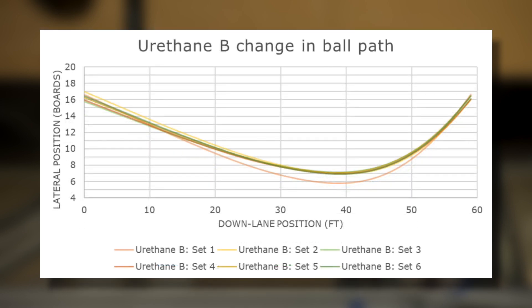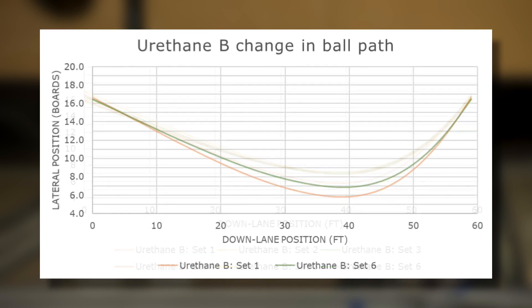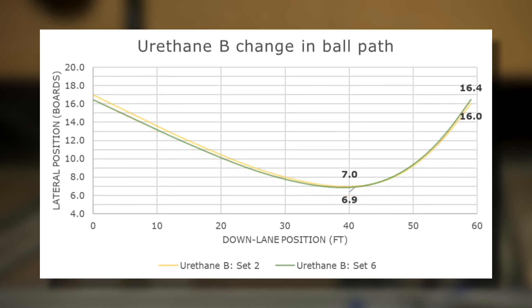Ball B showed similar results. Comparing the ball path averages for the first and sixth sets for this ball, we see that the average paths were about one board different at the breakpoint and returned to the same position at the pins. If we examine the difference in sets 2 and 6, we find that they were thrown on more similar lines, and there is very little difference as exhibited with urethane ball A. So even with the 7.1 point drop in hardness over use with this urethane model, there is still very little difference in ball path shape performance.